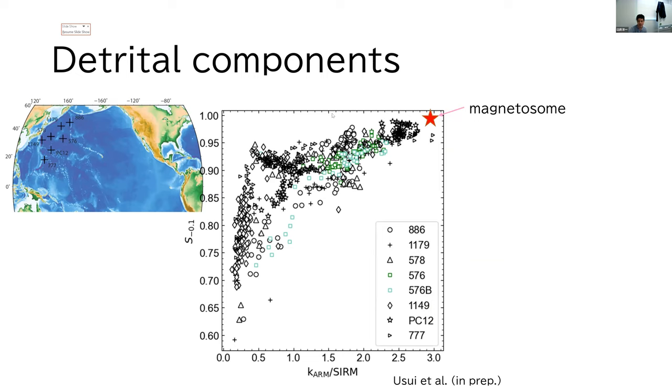But I think these data show more complex patterns, suggesting it is not simple single biogenic and single terrigenous component mixing.